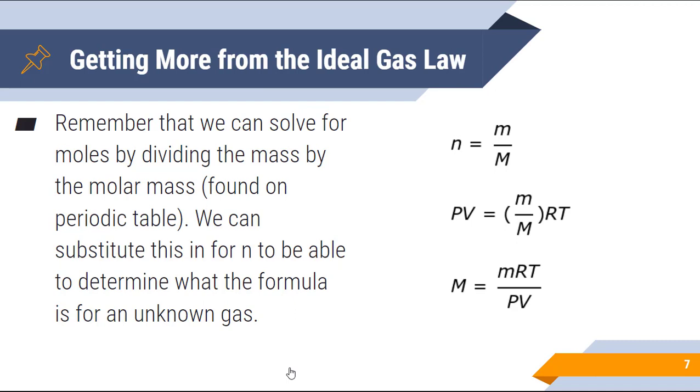And if we know the molar mass of an unknown gas, then we can determine what the unknown gas is based on the molar mass that we provide. So here, if you look on the right hand side, n equals m divided by big M. Little m is your mass. Big M is your molar mass. We plug that in for n and we can actually solve for the molar mass by having big M on the left hand side of the equation. So the molar mass will equal the mass times R times T divided by P times V.